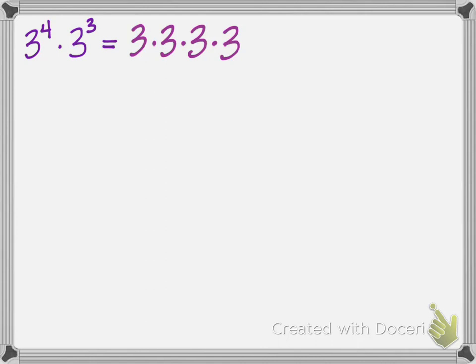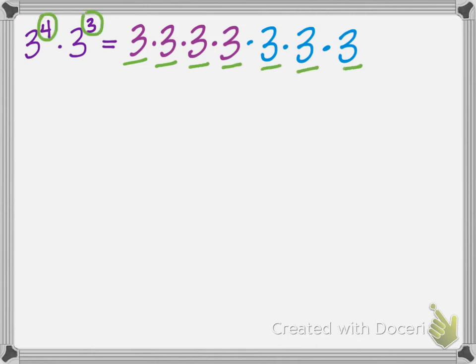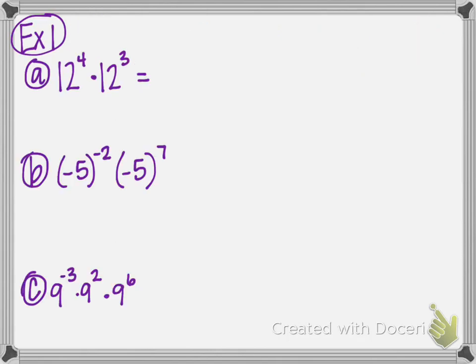Don't get your calculator out yet. Three to the third power is three times three times three. Count with me: one, two, three, four, five, six, seven. What's four plus three? It's seven. So all you have to do is add the exponents when you multiply powers with the same base. For example, 12 to the fourth times 12 to the third is 12 to the four plus three, which is 12 to the seventh power.